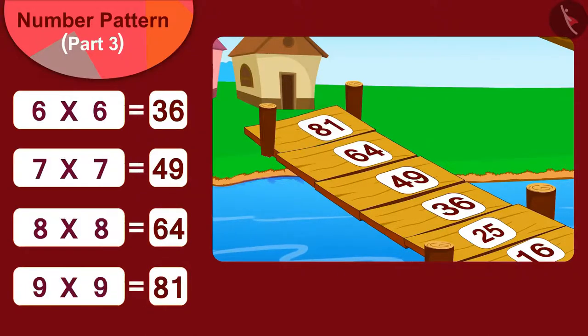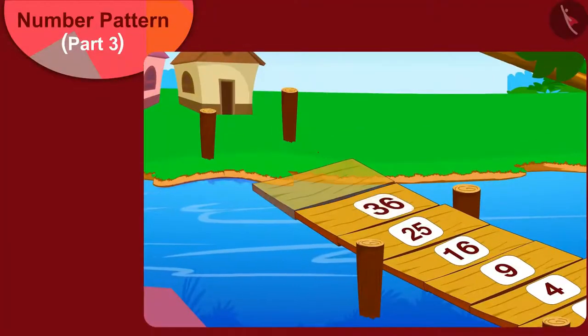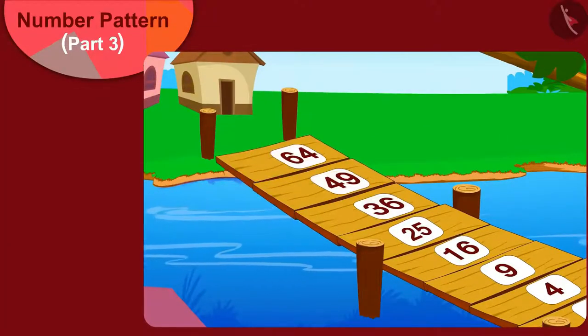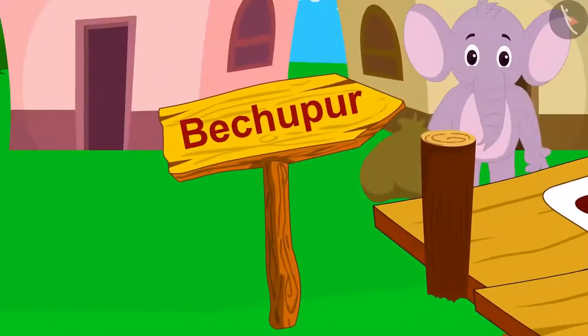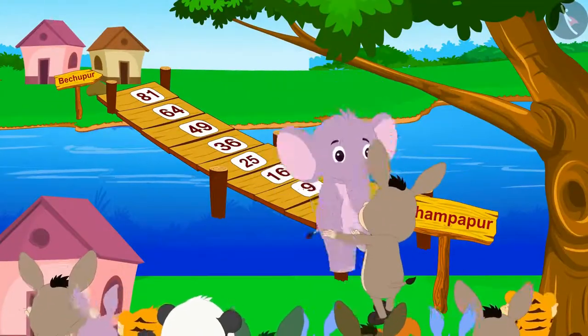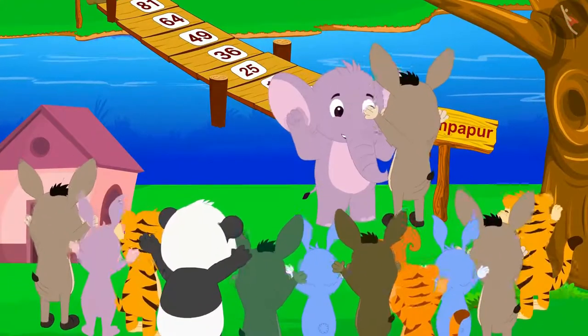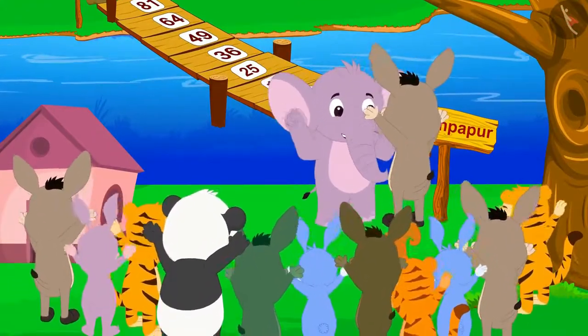The villagers also together wrote these numbers on the bridge and finally the bridge between Champapur and Bechupur was completed. All the villagers started dancing happily.